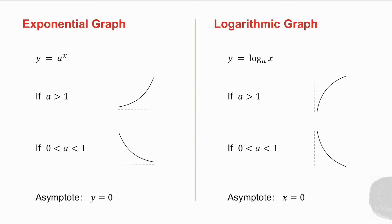If I look at my logarithmic graph, if a is greater than 1, that's what my graph looks like because it's a reflection of this graph in the line y equals x. If a is between 0 and 1, my graph looks like that. Again, it is a reflection of this graph in the line y equals x.